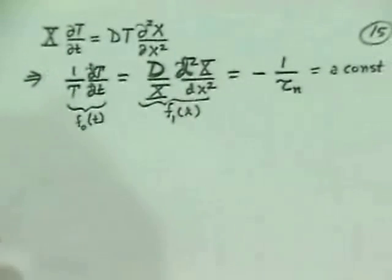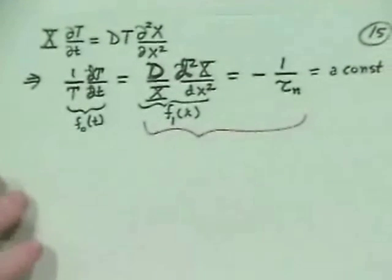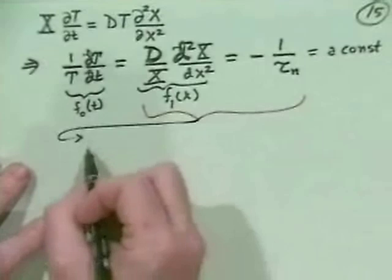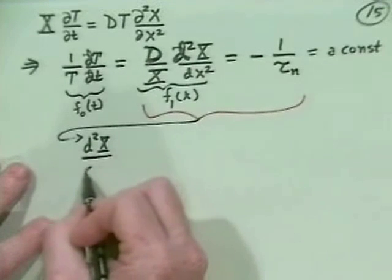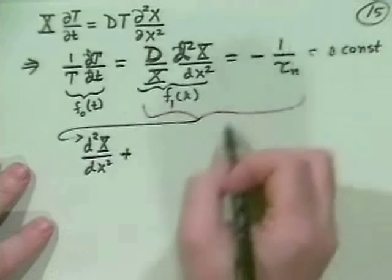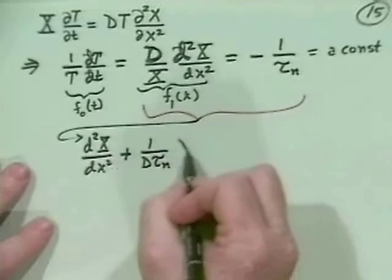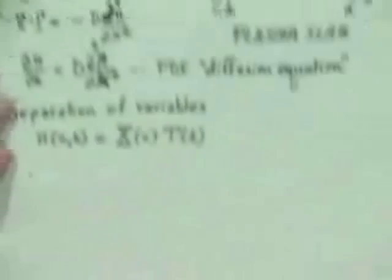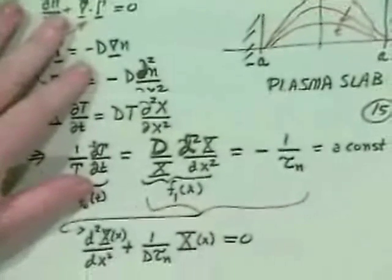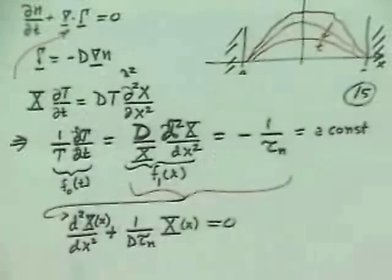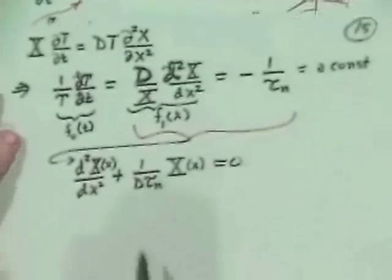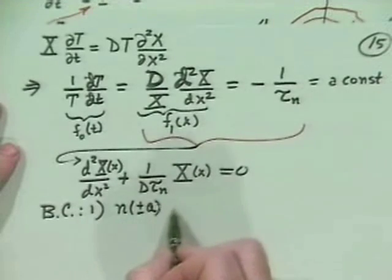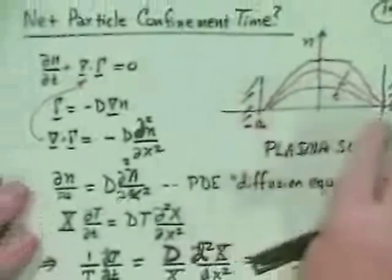This will give us eigenmode solutions. The spatial part satisfies d²X/dx² plus one over D tau_n times X equals zero. For our plasma slab, the boundary conditions are: the density vanishes at x equals plus or minus a (walls), and by symmetry, dn/dx equals zero at x equals zero.